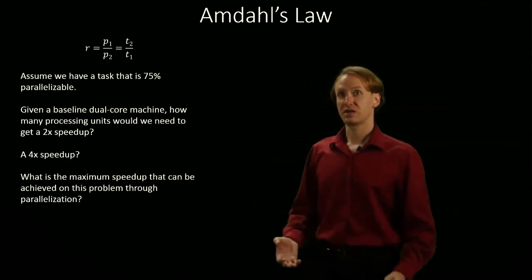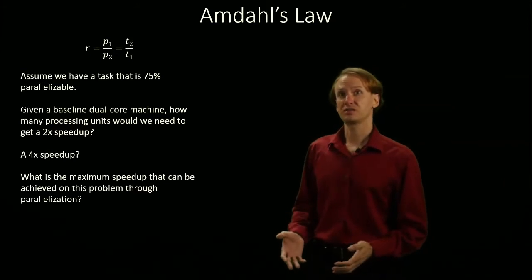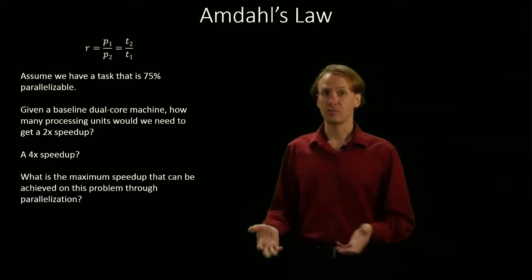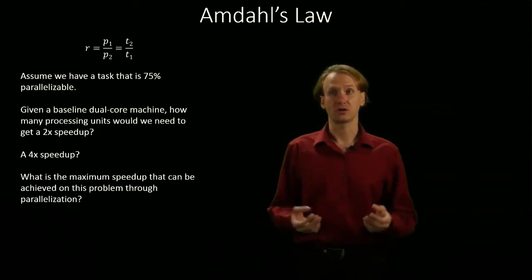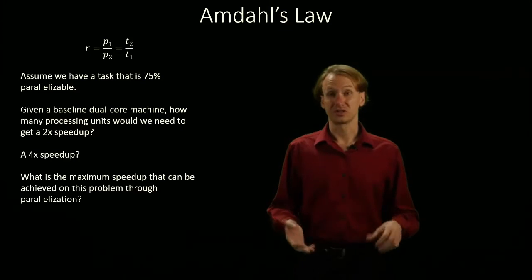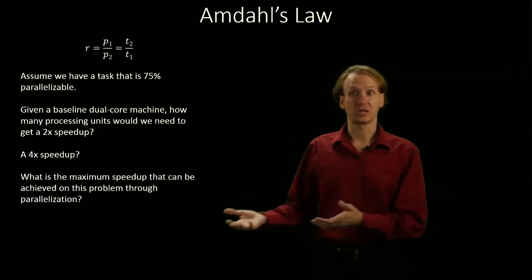So, in this case, we have a task that's 75% parallelizable, and we're starting with a dual-core machine, and we'd like to see how many processing units would be required to get a 2x speedup, 4x speedup, and really just what is the maximum amount of speedup we can get on this problem.